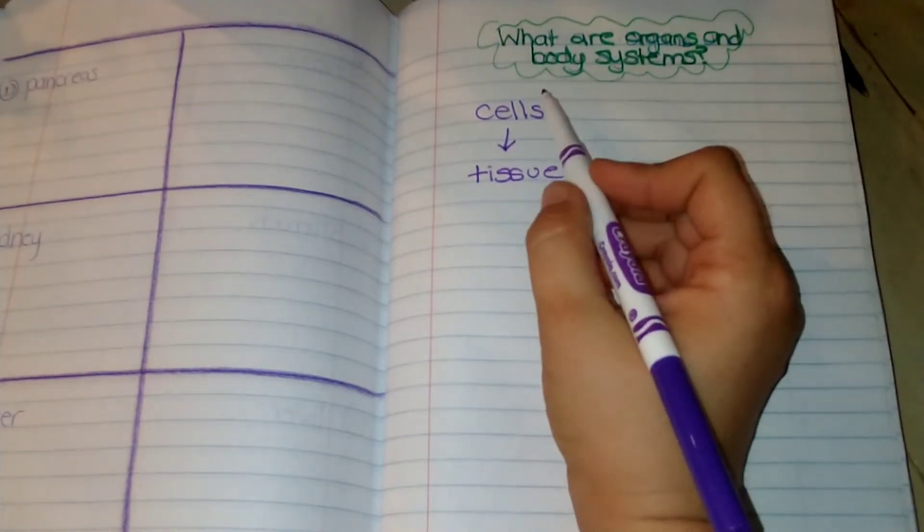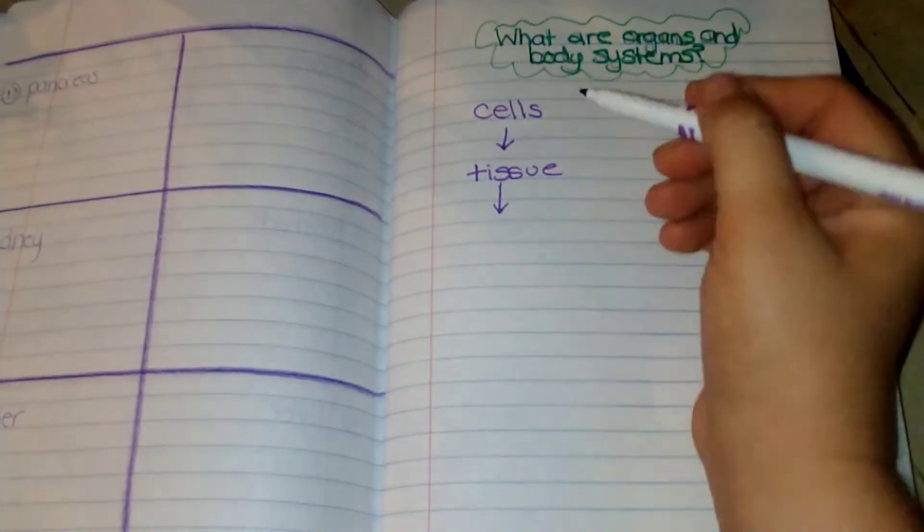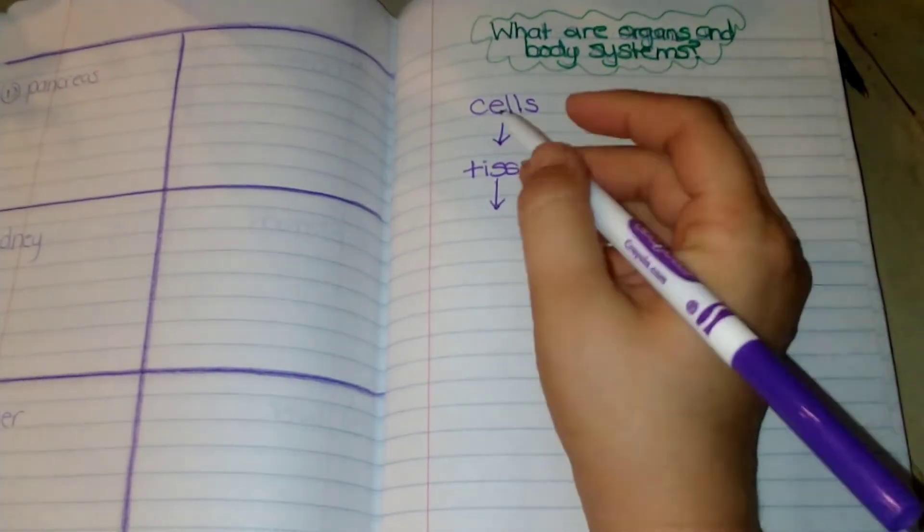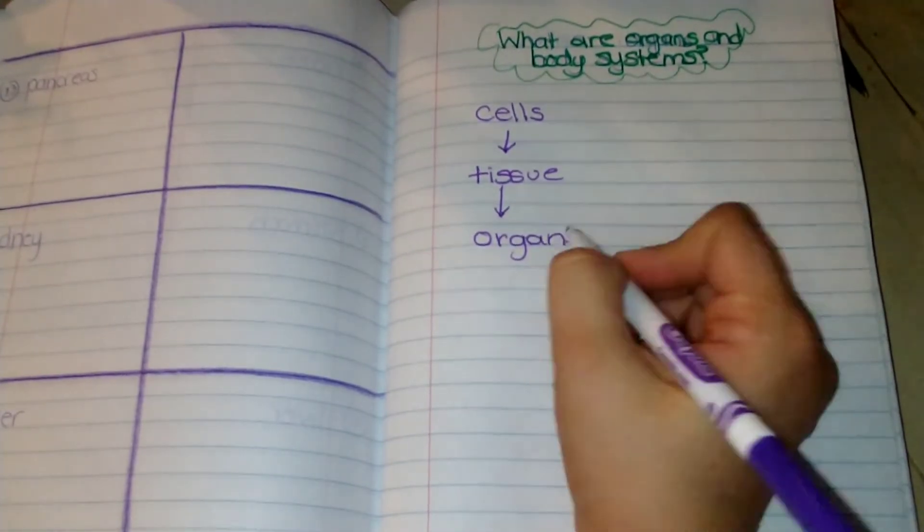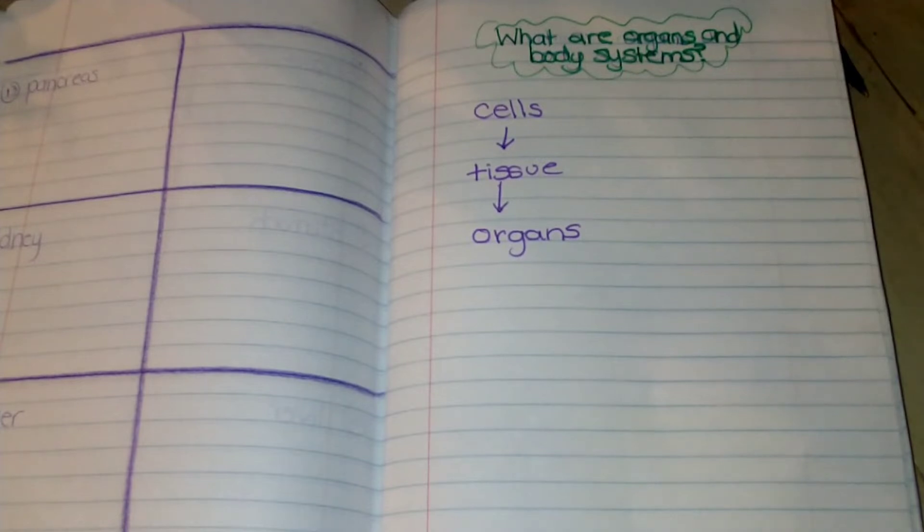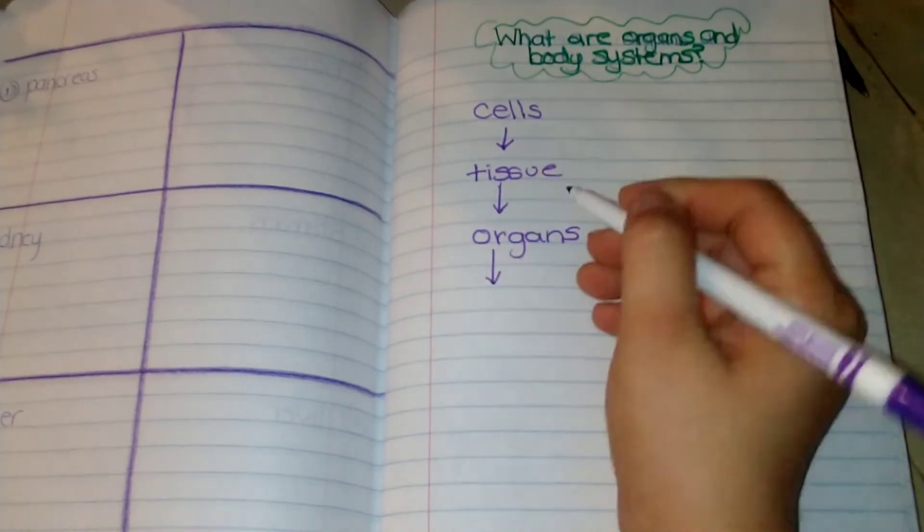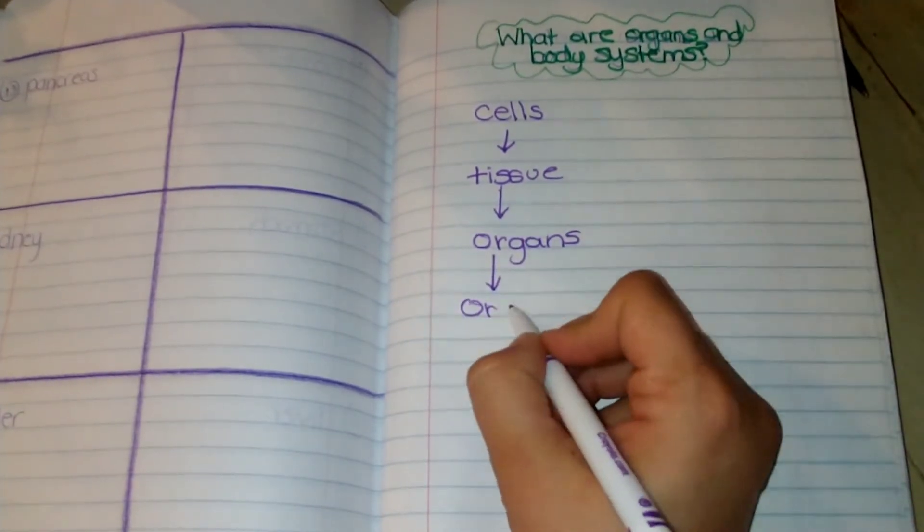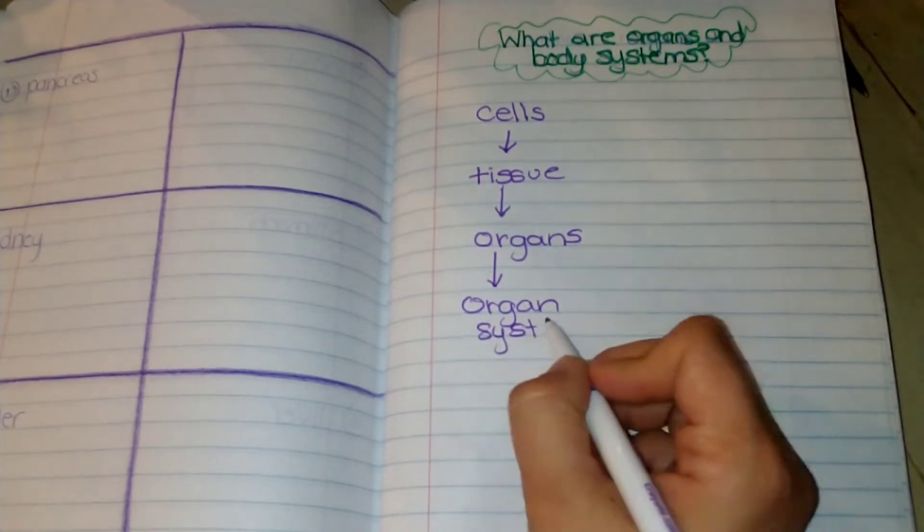So cells come together and form tissue, and tissue comes together to form organs. And remember, we said an organ—organs are body parts that are made up of smaller parts that work together to do a specific job. Organs come together to make an organ system, which is organs working together to do a certain job.